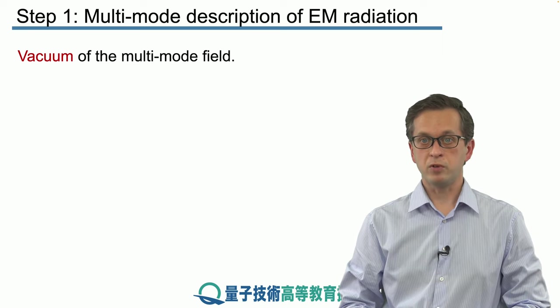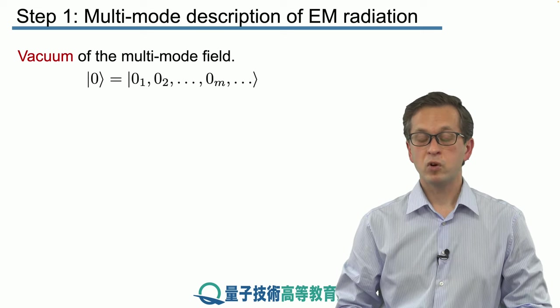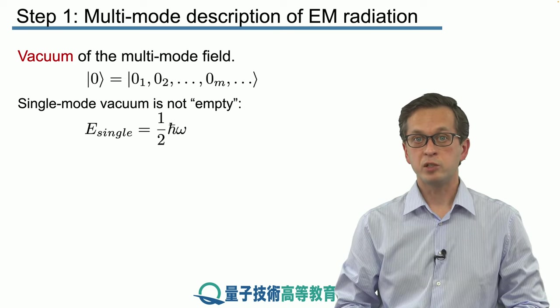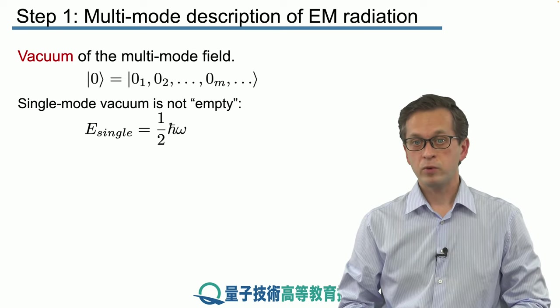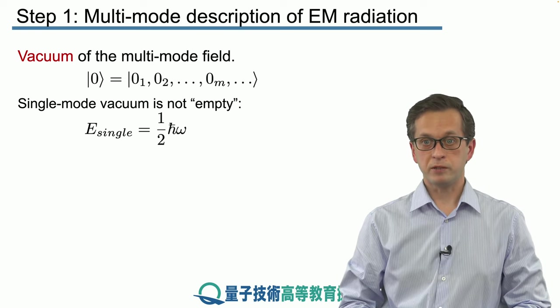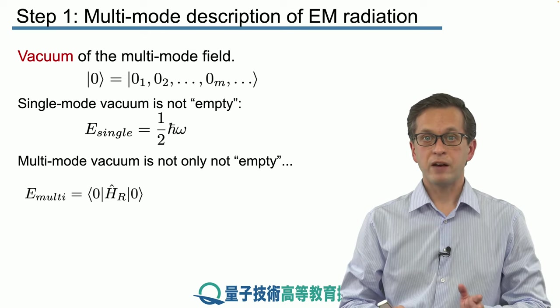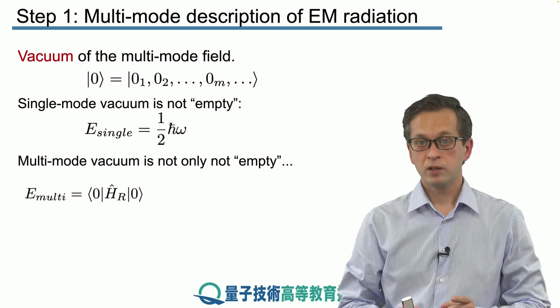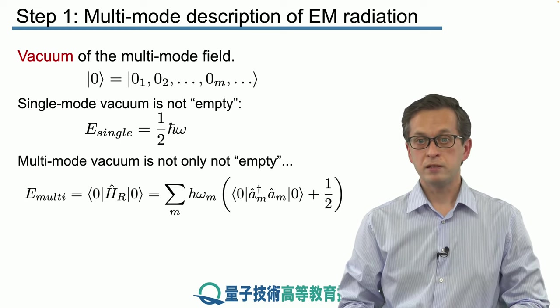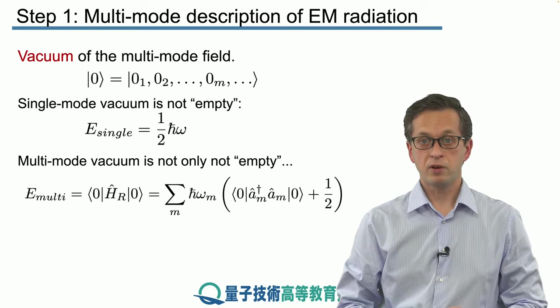And also, a very peculiar thing about the vacuum of a multimode field. We have seen in the previous lessons that the vacuum of a single mode is not empty, meaning it has a finite energy given by one half h bar omega. We also said that this has very important consequences for many other areas of quantum optics. What's the case for the multimode vacuum? Well, let's compute the average energy of the vacuum by computing the following expectation value of the Hamiltonian.